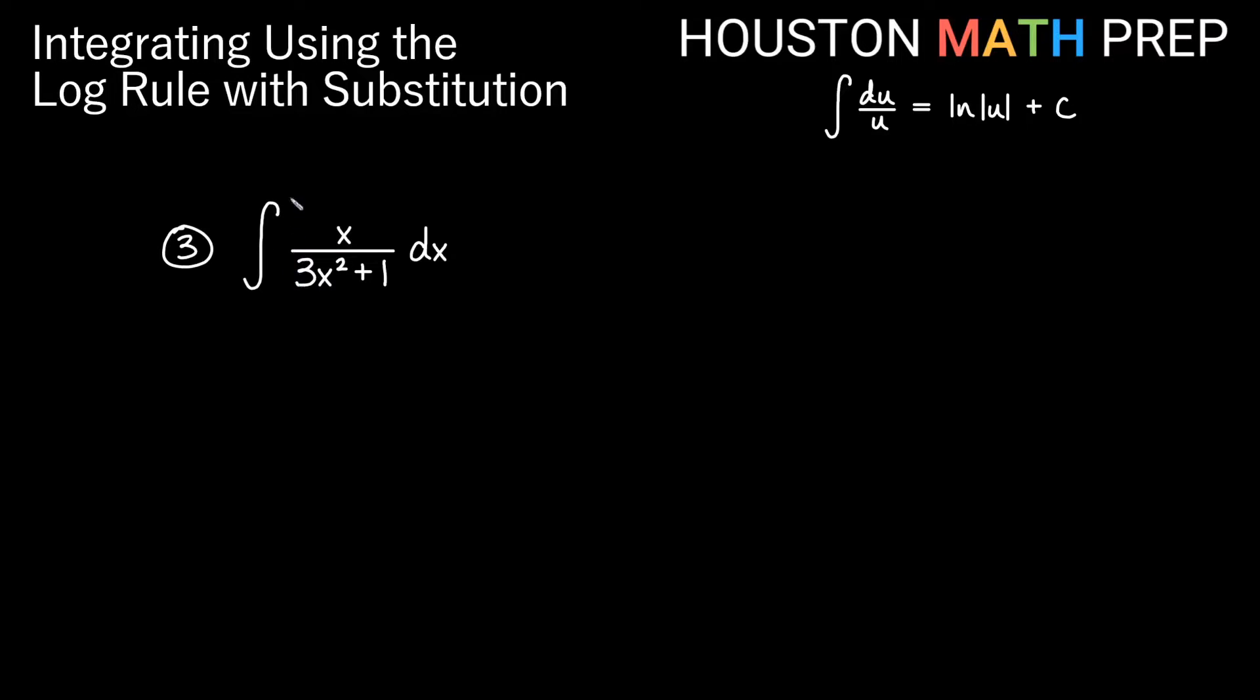Looking at our third one, we have the integral of x over 3x squared plus 1 dx. So again choosing our denominator to be u. And that's good because the derivative of the denominator is an x term, and that's what we have on top. So we'll just work out the constant multiple difference as we go. The derivative of this is actually 6x. So we get that du is 6x dx. And so this down here is going to be our u. We'll replace that. Up here we have x dx.